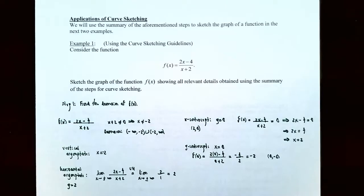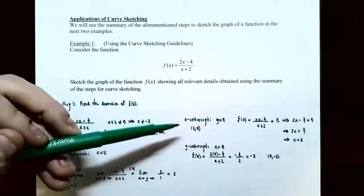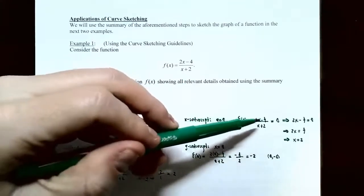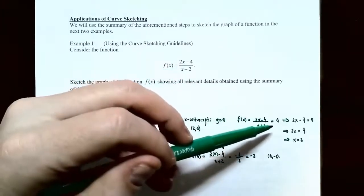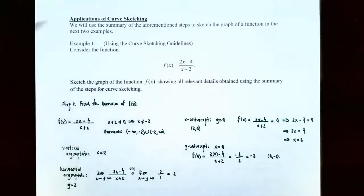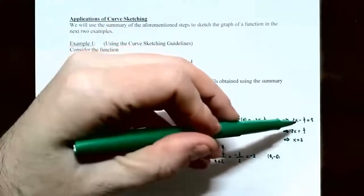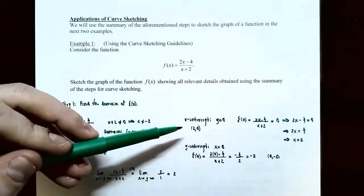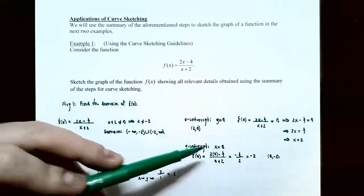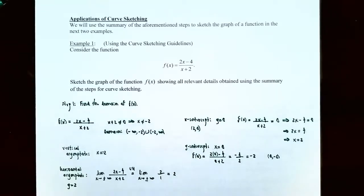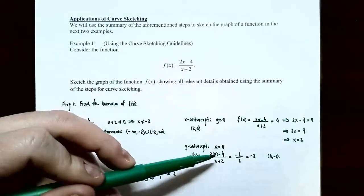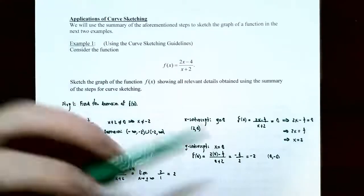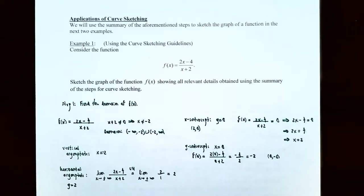Now let's find the intercepts. For the x-intercept, set y = 0: (2x − 4)/(x + 2) = 0. A fraction equals zero only when the numerator is zero, so 2x − 4 = 0, giving x = 2. The x-intercept is at (2, 0). For the y-intercept, plug in x = 0: f(0) = (−4)/2 = −2. So the y-intercept is at (0, −2).